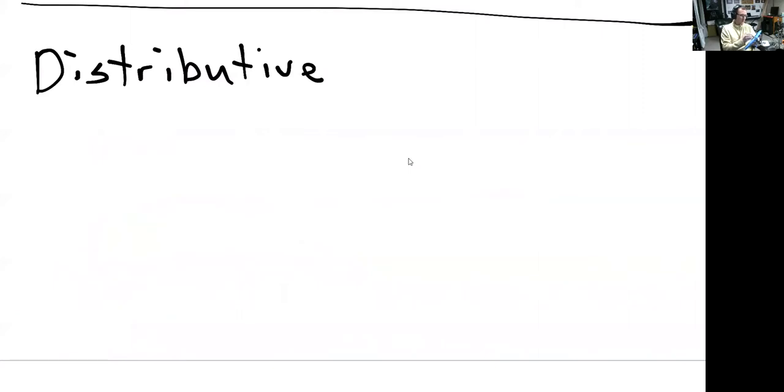So the distributive property takes with it a couple operations. We're going to work with addition and multiplication, which sometimes I'll abbreviate with a dot. The distributive property for addition and multiplication goes like this: let's say we have 2 times 6 plus 3.